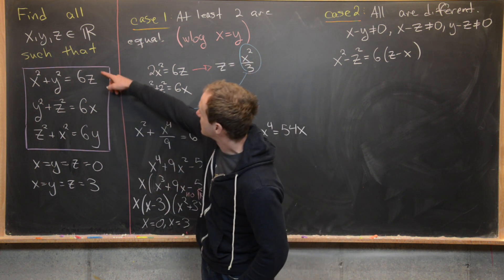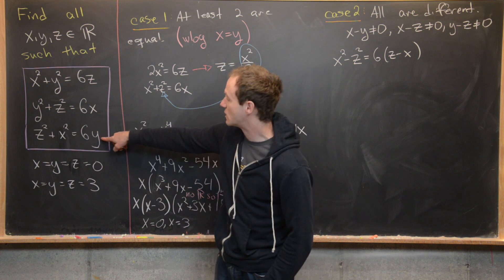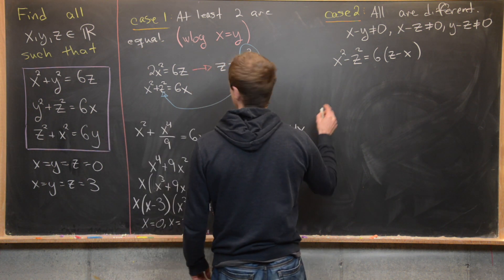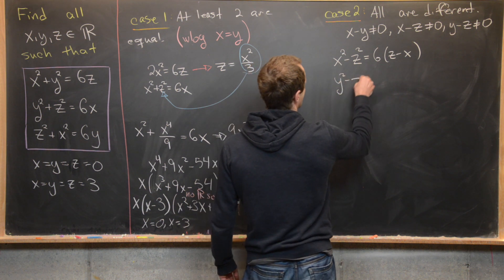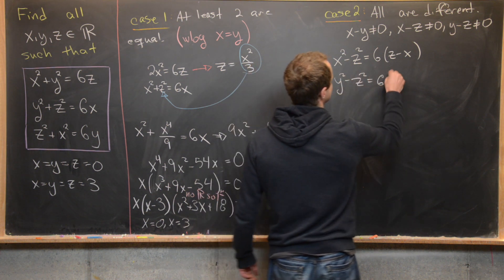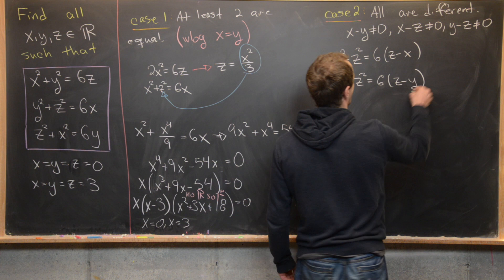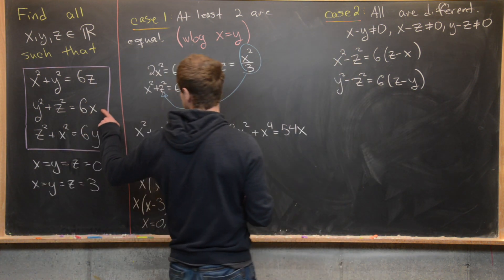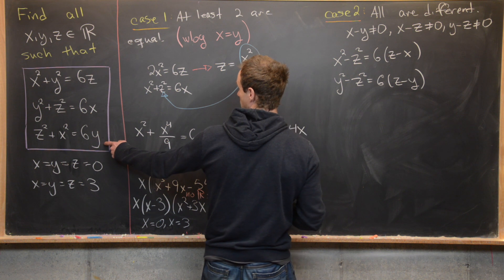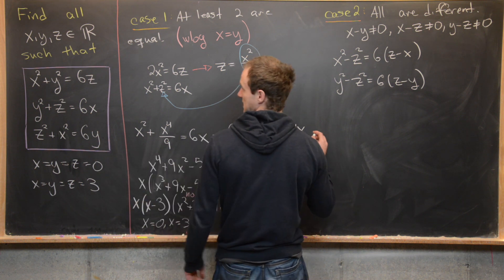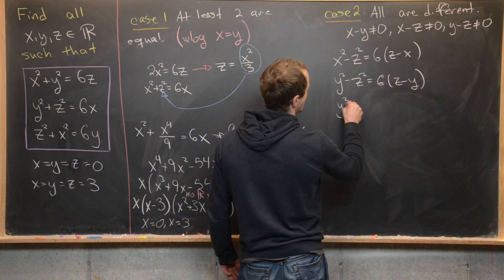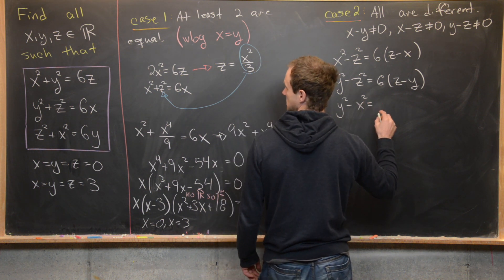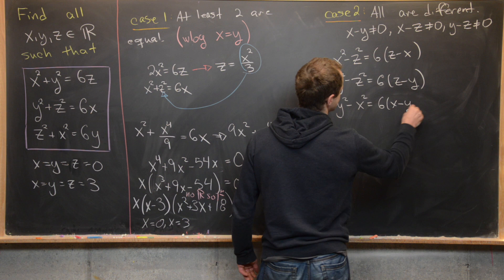Furthermore, I can do equation one minus equation three and have a similar result. So that's going to give me y² - z² = 6z - 6y. And then finally, I can do my second equation minus my first equation, so that's going to give me y² - x² = 6x - 6y.